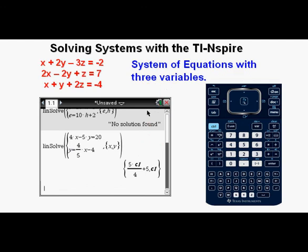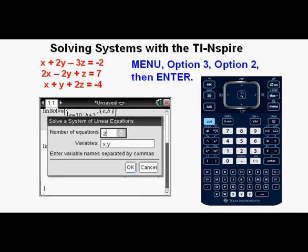Now we have this system with three equations and three unknowns. x plus 2y minus 3z equals negative 2, 2x minus 2y plus z equals 7, and x plus y plus 2z equals negative 4. Go to menu and down to option 3, algebra, then to option 2, solve system of linear equations, then enter. For this system, we need to enter three equations, then the variables x, y, and z.